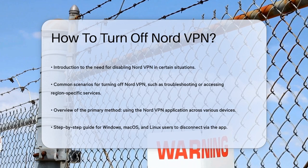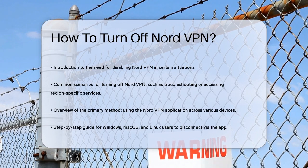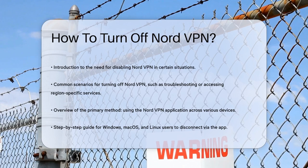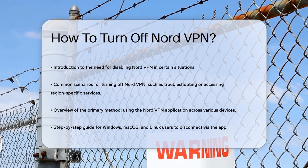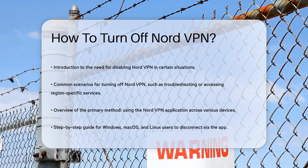turning off NordVPN is simpler than you might think. Let's start with the most common method, which is using the NordVPN app itself. If you're on a Windows, macOS, or Linux device, you can easily disconnect from the VPN right from the app. Open the NordVPN application, and you'll see a big button that says Disconnect or Turn Off. Clicking this button will immediately terminate your VPN connection.